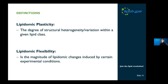We then went on and wanted to more systematically analyze variations and patterns of lipid composition observed in the different sample types. We defined two parameters. The first is what we call lipidomic plasticity, which we define as the degree of structural heterogeneity or variation within a given lipid class — meaning the degree of variation in double bond numbers and hydrocarbon chain length. The other is lipidomic flexibility, which is the magnitude of lipidomic changes induced by certain experimental conditions: sex, diet, and genotype.